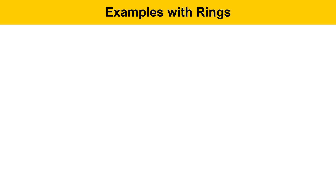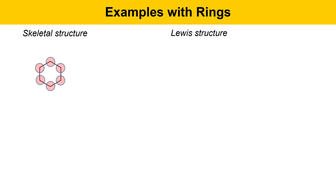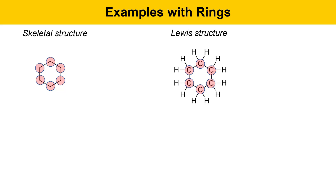This slide has some examples with rings. Here's an example of cyclohexane, a six-membered ring alkane with six carbons. Carbon is present at every one of the kinks in this structure, indicated by the pink circles. In the Lewis structure, each one of these carbons needs to be making enough bonds to hydrogen to fill out its valence number of four. For this molecule, it's two hydrogens per carbon atom, and this is the Lewis structure of cyclohexane.